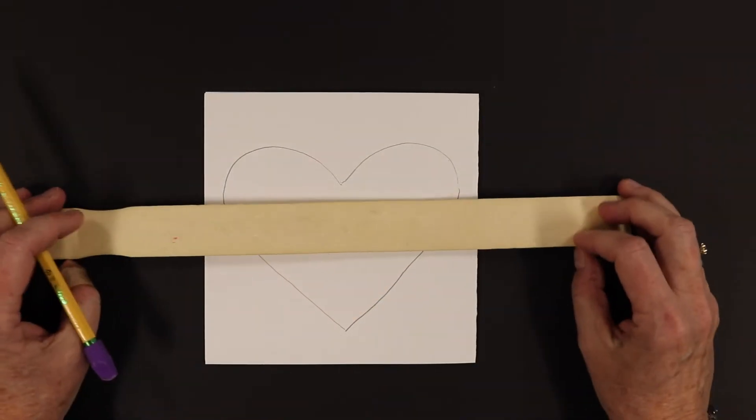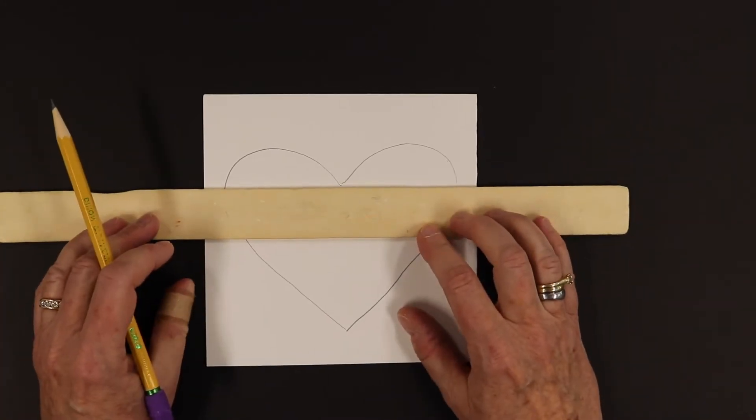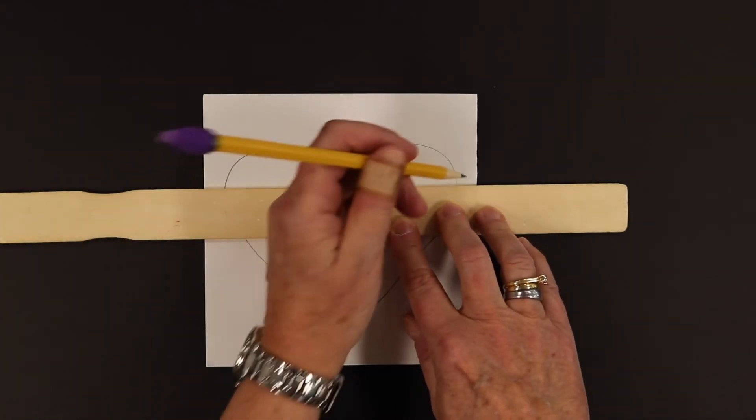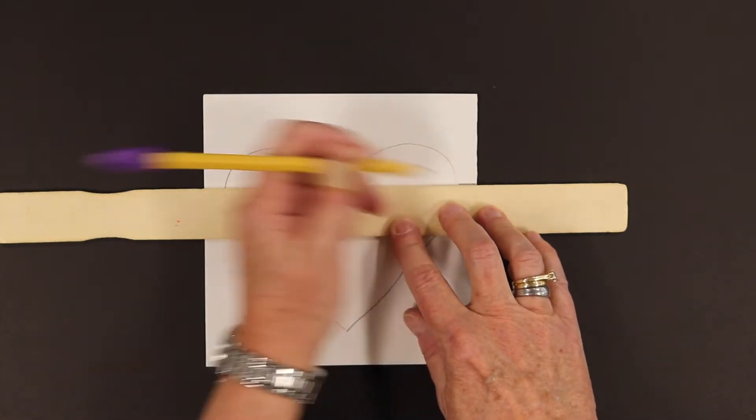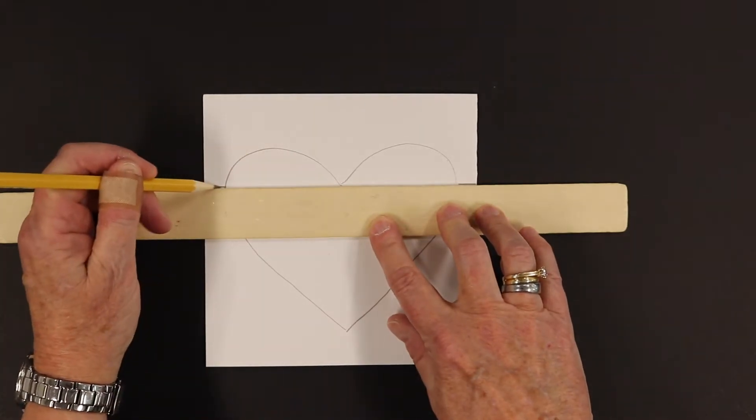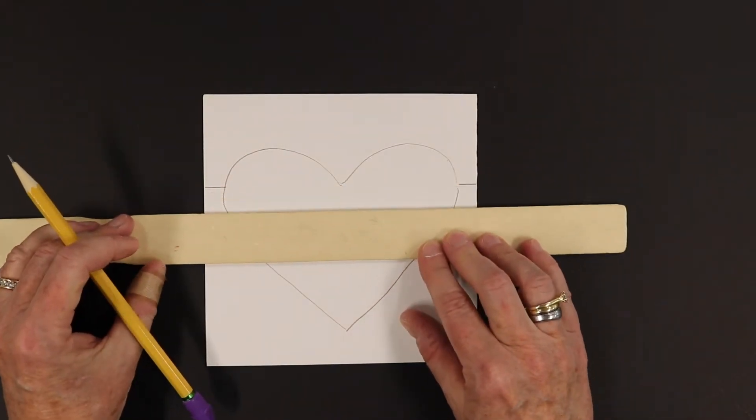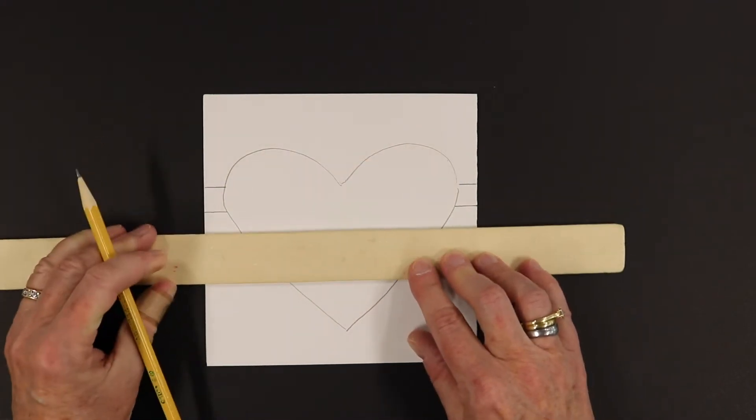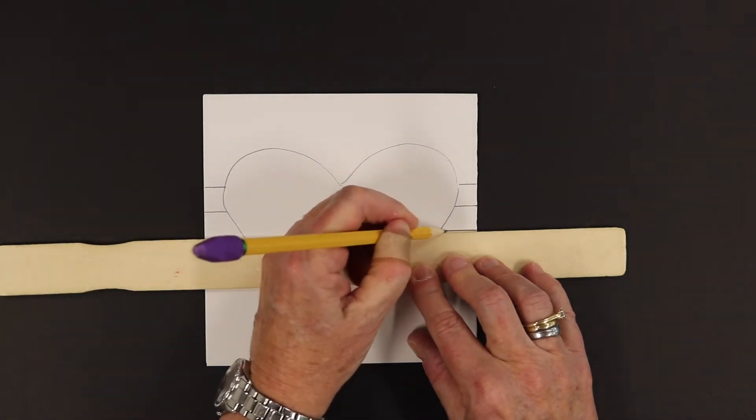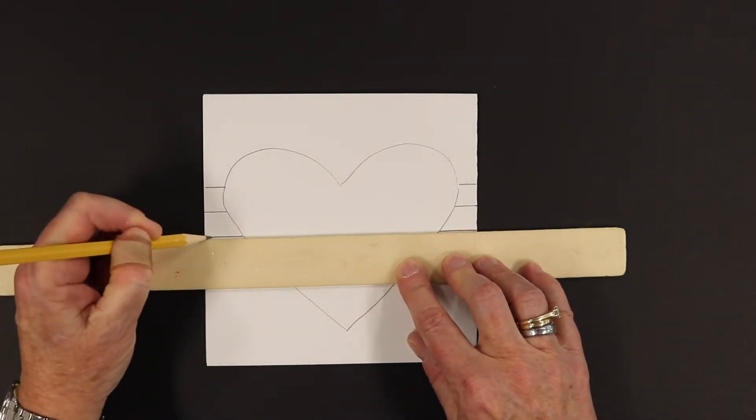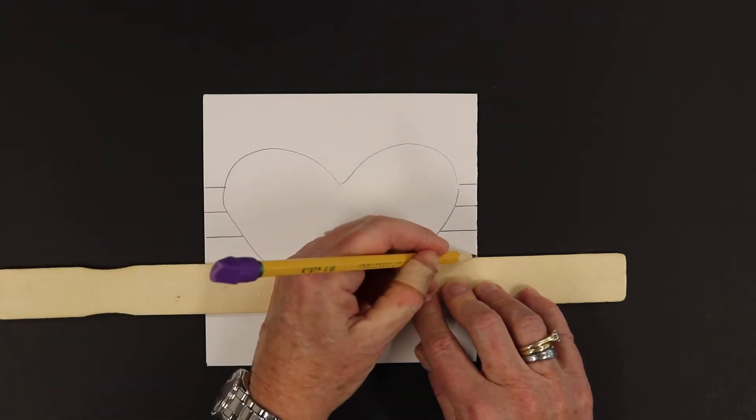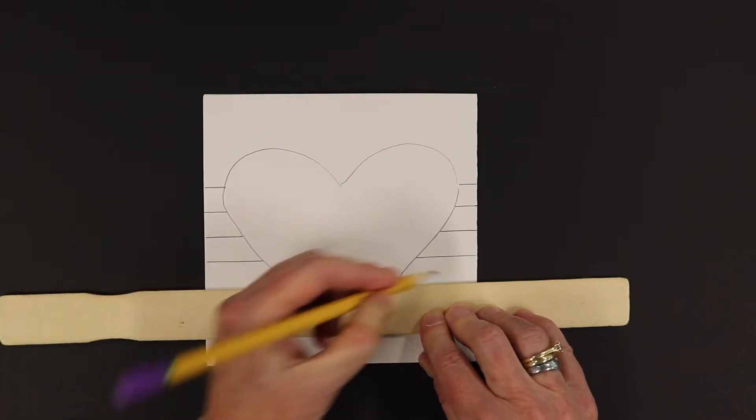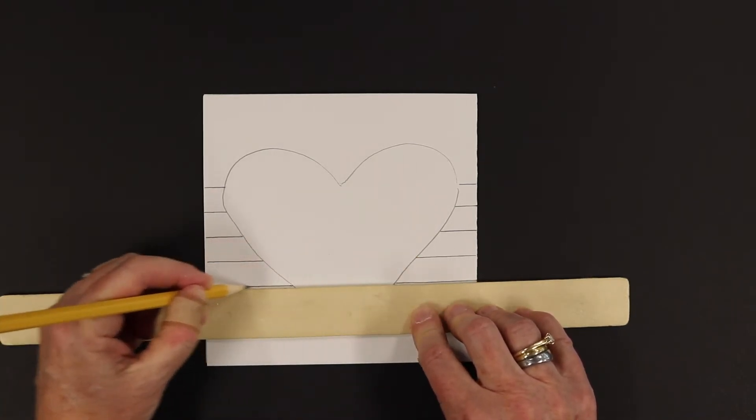Alright, now we're going to be drawing horizontal lines across your paper, but skipping over your heart, and I'll show you why. So I'm just going to start where the heart comes down to a point, and then I'm going to move down, and I'm going to try and make them visually evenly spaced. You don't have to measure them with your ruler. You can if you want to, but it's not necessary. But I draw the line, stop at the heart, and skip over. And you're going to fill your whole page.